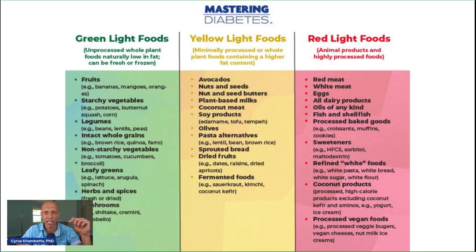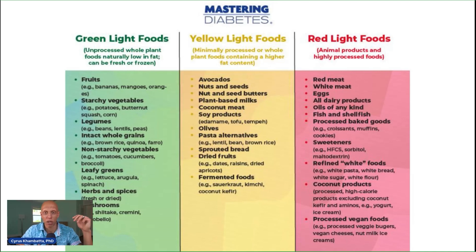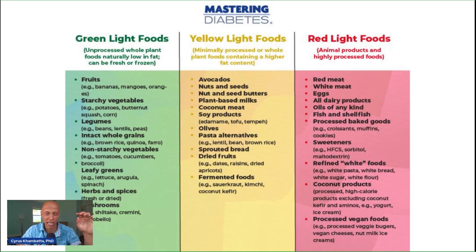On the right-hand side, we have the red light category, which includes red meat, white meat, eggs, all dairy products, oils of any kind, fish and shellfish, processed baked goods like croissants, muffins, and cookies, sweeteners like high fructose corn syrup, sorbitol, mannitol, and maltodextrin, refined white foods like white pasta, white bread, white sugar, and white flour, coconut products like processed coconut kefir and coconut aminos, and processed vegan foods like veggie burgers, vegan cheeses, and nut-based ice creams.